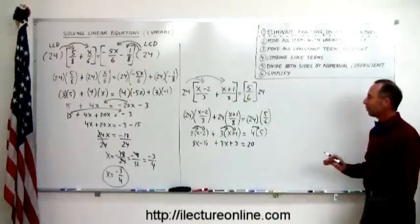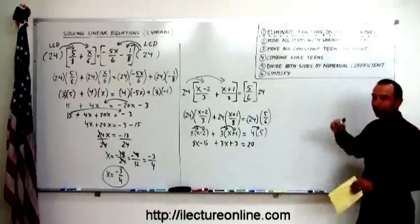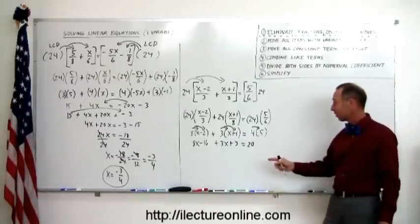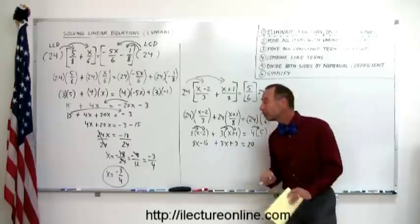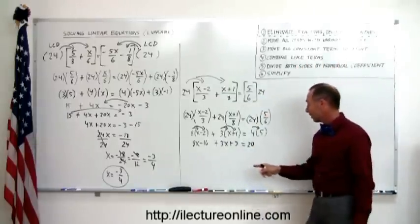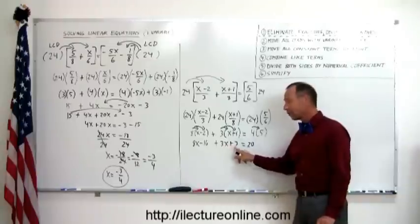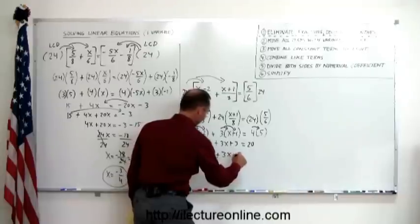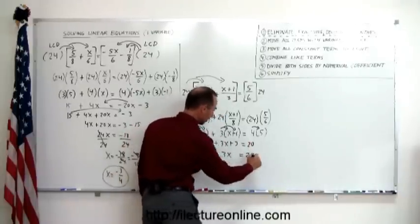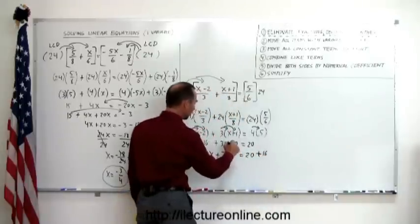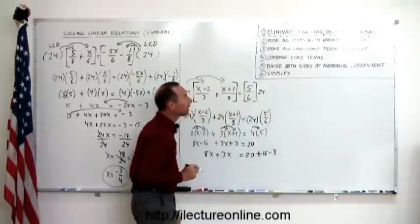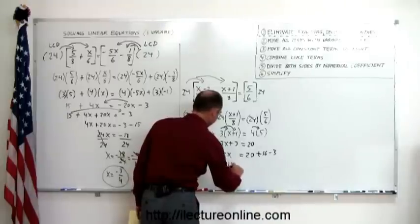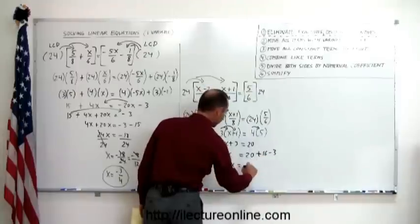Now we have a simple linear equation without any fractions or parentheses. The x terms are already on the left, so we move the constant terms to the right. The minus 16 moves across and becomes plus 16, and the plus 3 moves across and becomes minus 3. So we get 8x plus 3x equals 20 plus 16 minus 3. Combining like terms: 8 plus 3 is 11x, and 20 plus 16 minus 3 is 33.